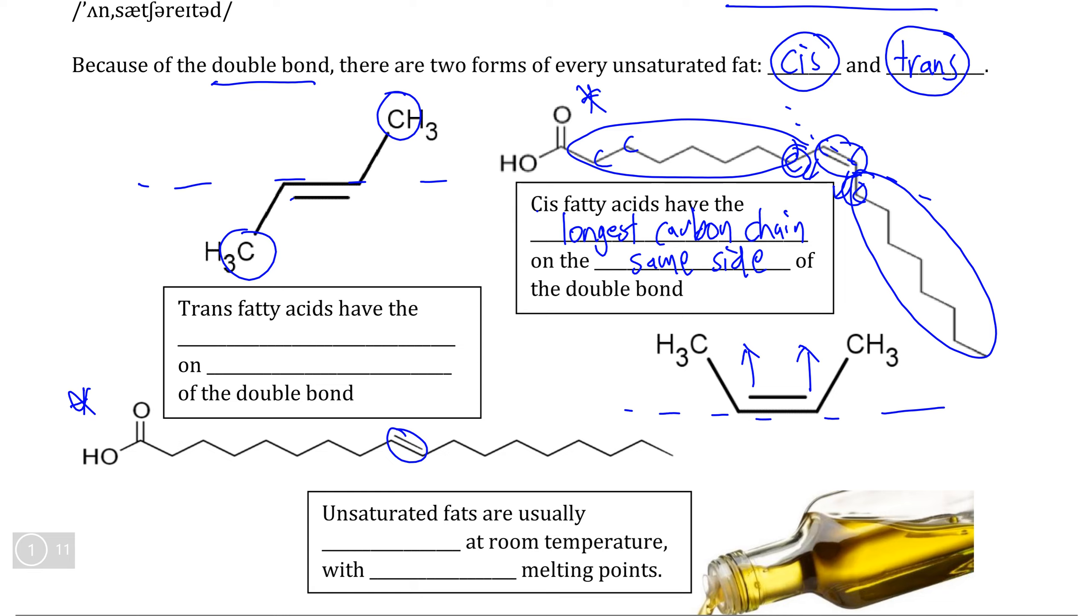So if we do the dotted line test and indicate where the carbons point away, we see that one of the carbons is pointing up and the other carbon is pointing down. And we can see the same being true in this fatty acid here. So when we take a look at the longest carbon chains that are coming off of the double bond, we see in this form that they are on the opposite side of the double bond or opposite sides of the double bond.